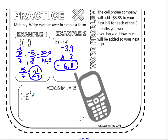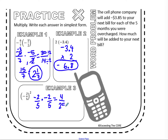Let's look at example 3: negative 2 fifths squared. Squared means you're taking the same number times itself, so that's negative 2 fifths times negative 2 fifths. Multiplying straight across: negative 2 times negative 2 is positive 4 — same sign, answer positive. 5 times 5 is 25. So 4 twenty-fifths is my answer, already in simplest form.